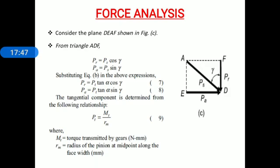The tangential component is determined from the relation: pt = Mt/rm, where Mt is the torque and rm is the pitch circle radius — that is equation 9. Important: in bevel gear force analysis, rm is the radius of the pinion at the midpoint along the face width, because the resultant tooth force acts at the midpoint of the face width.